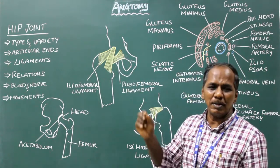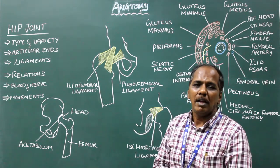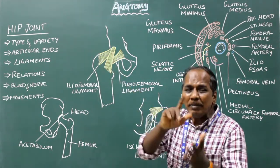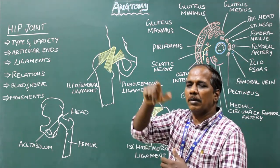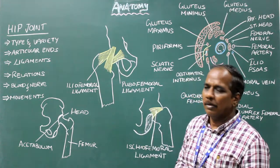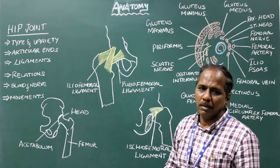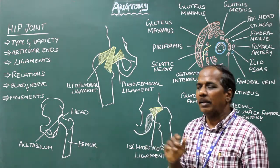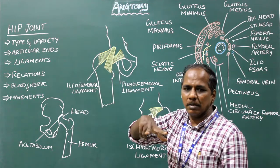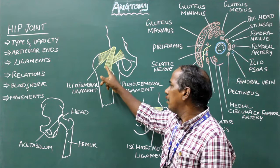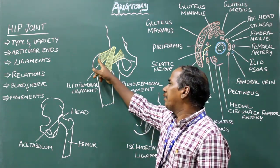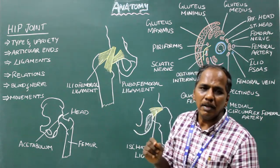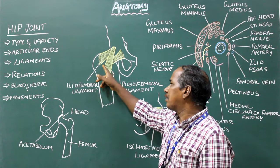Iliofemoral ligament, also known as ligamentum Bigelow, is the strongest ligament and is also known as the antigravity ligament. It is an inverted Y-shaped ligament. Proximally, it is attached to the lower part of the anterior inferior iliac spine. Distally, it splits into two bands — a superior band attached to the upper part of the intertrochanteric line, and an inferior band attached to the lower part. In between the two bands, the capsule is weak.